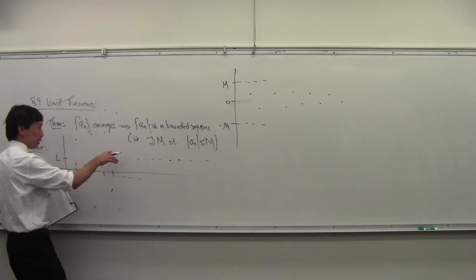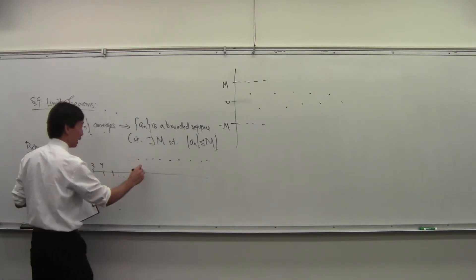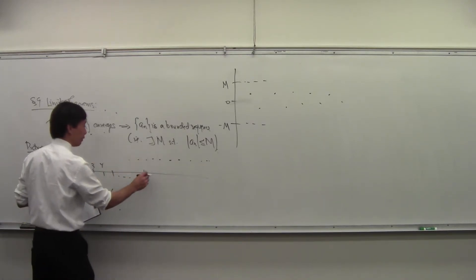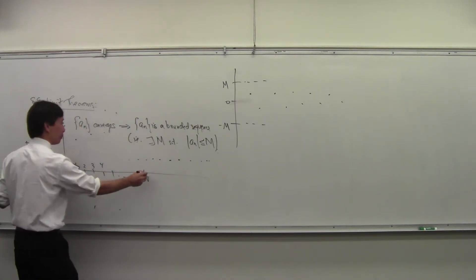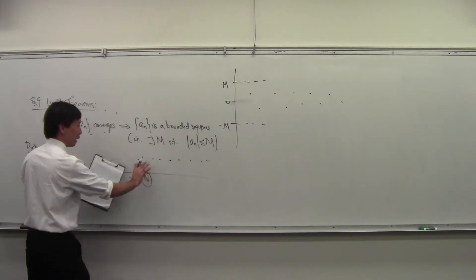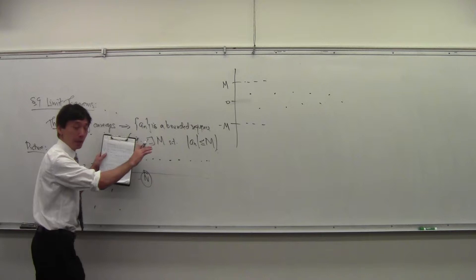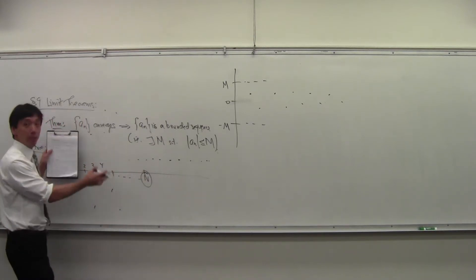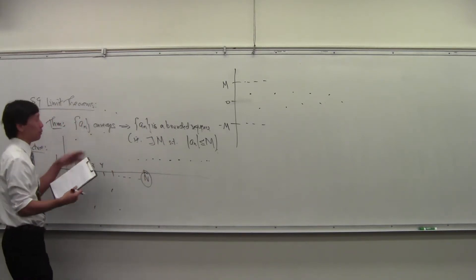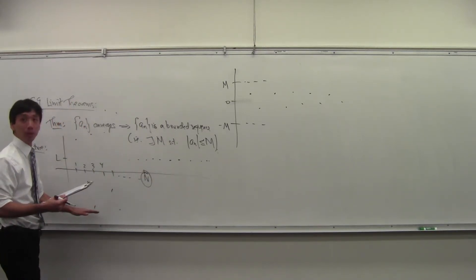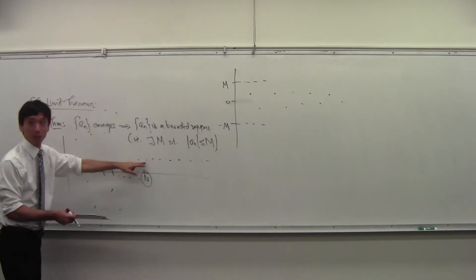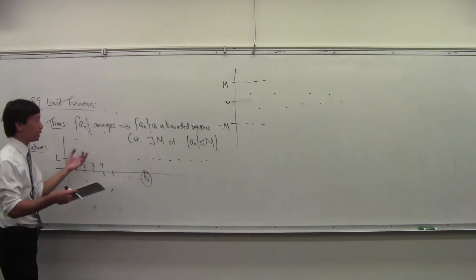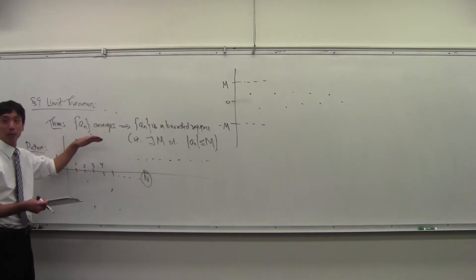These guys are converging to L, so I know that I can make everybody close to L. Past some time, everybody's close to L. Before that time, there's only finitely many of them — so there's a maximum value and a minimum value. Those guys are bounded, and these guys are bounded because they're close to L. Put that together and the whole sequence is bounded.